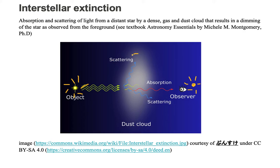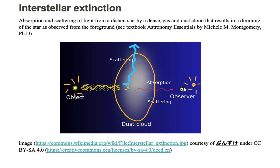The extinction part is the dust and gas cloud that's between the two stars. We have yellow starlight coming into the gas and dust cloud and it's going to get extinguished. Blue light will get scattered out of the cloud, and the cloud has gas and dust that will absorb some of this yellow light coming in.